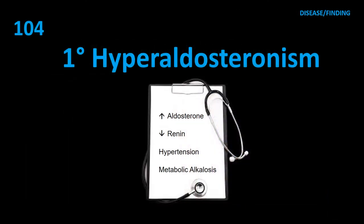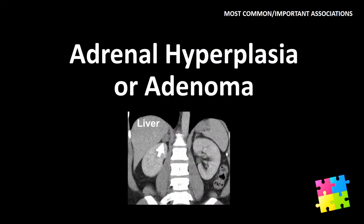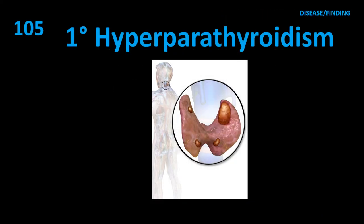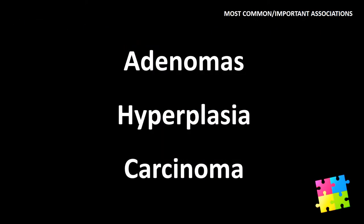Item 104–105: Primary hyperaldosteronism — causes include adenoma, hyperplasia, and carcinoma.